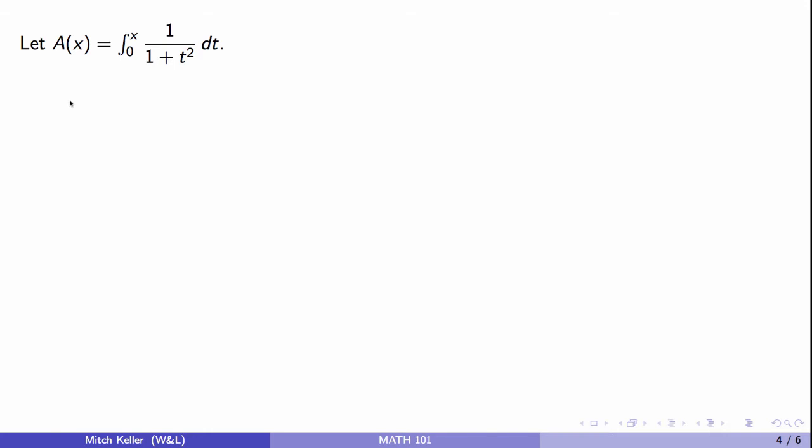Well, the first thing is, what's A prime of x? Well, that is nice and simple by the second fundamental theorem of calculus. A prime of x is 1 over 1 plus x squared. This is always positive.